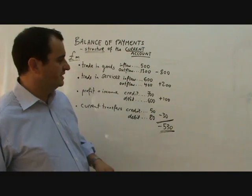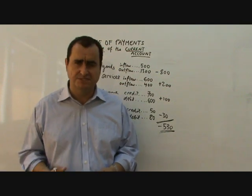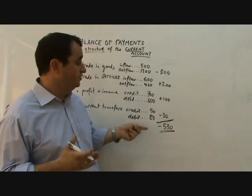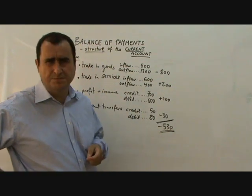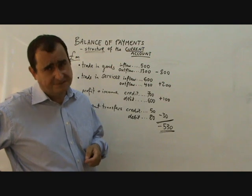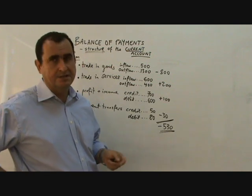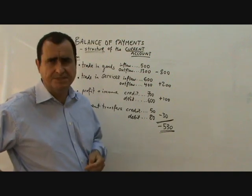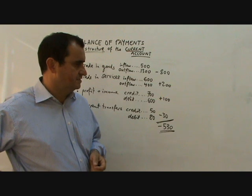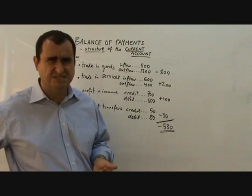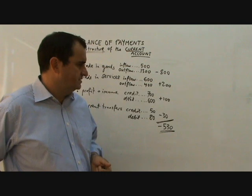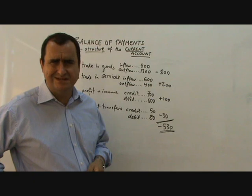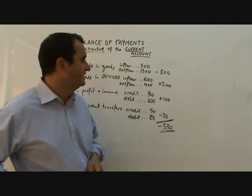We usually measure current account deficits in terms of percentage of GDP. The UK's is currently around 3% to 4% deficit — that's overspending 3% or 4% of British GDP. Japan has a surplus, whereas America has a deficit; although it's reduced slightly, it's still around 5% to 6%. And Greece, where I am living, has a deficit of something like 9%, 10%, or 11% — a very big deficit.